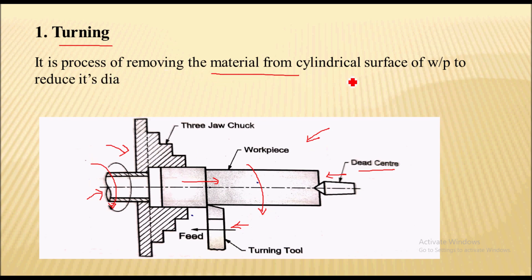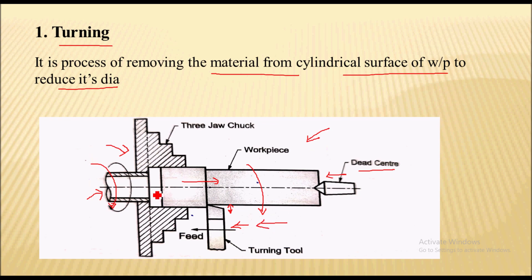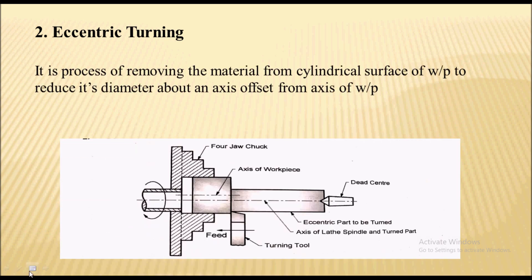Turning is a process of removing material from the cylindrical surface of a workpiece to reduce its diameter. Here you can see the diameter of the workpiece is reduced by feeding the turning tool against the rotating workpiece. The motion of the tool is parallel to the workpiece axis. This is the turning operation, which is used to reduce the diameter of the workpiece.